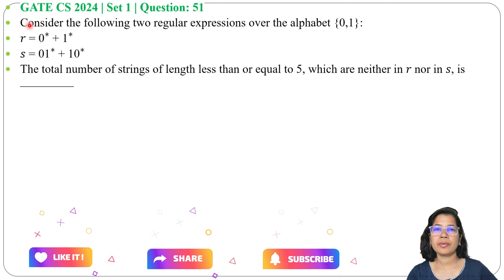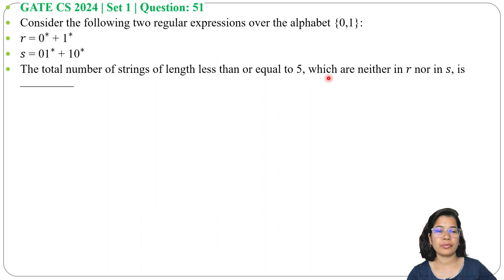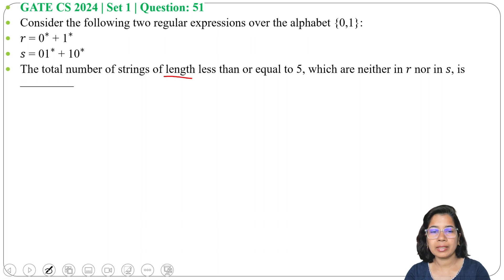Let's solve one previous question on regular language. This question was asked in GATE year 2024, Set 1, question number 51. Consider the following two regular expressions over the alphabet {0,1}: R and S. The total number of strings of length less than or equal to 5 which are neither in R nor in S is blank. The question is asking about length less than or equal to 5.